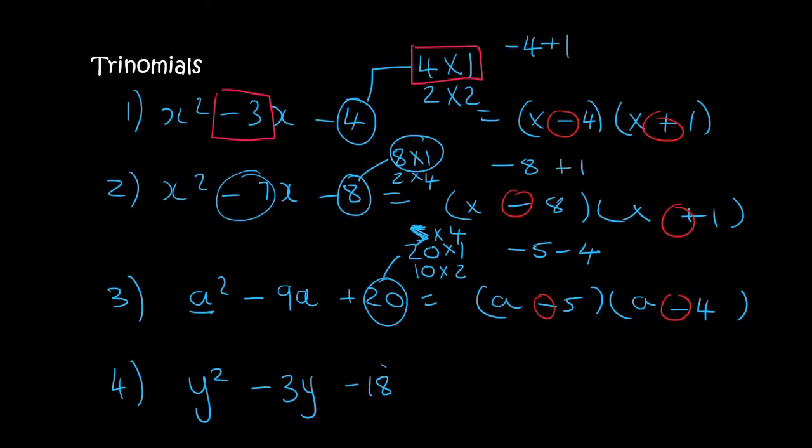With the next one we're using y, so we know that 18 is 6 times 3 or 18 times 1 or 2 times 9. We could make the number minus 3 by using 6 and 3. How? By saying minus 6 plus 3. So you're going to have two brackets where you have y minus 6 and y plus 3.